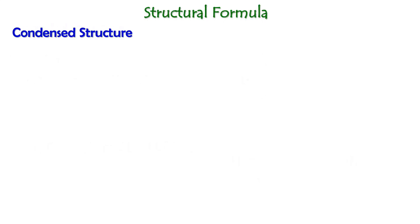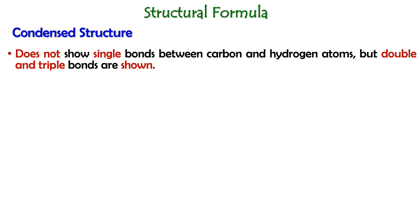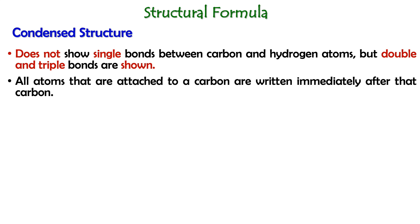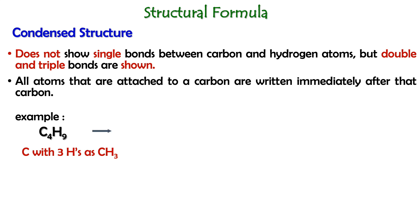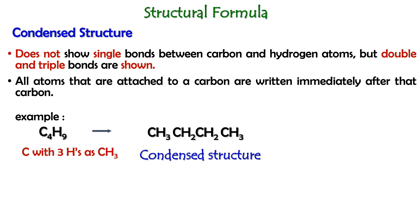Next, we are going to look at the condensed structure. Condensed structure is a structure where it does not show single bonds between carbon and hydrogen atoms, but double and triple bonds are shown. All atoms that are attached to a carbon are written immediately after that carbon. For example, if we have a C4H9 molecule, the carbon atom with three hydrogens will be written as CH3. So the condensed structure of this molecule would be CH3CH2CH2CH2CH3.